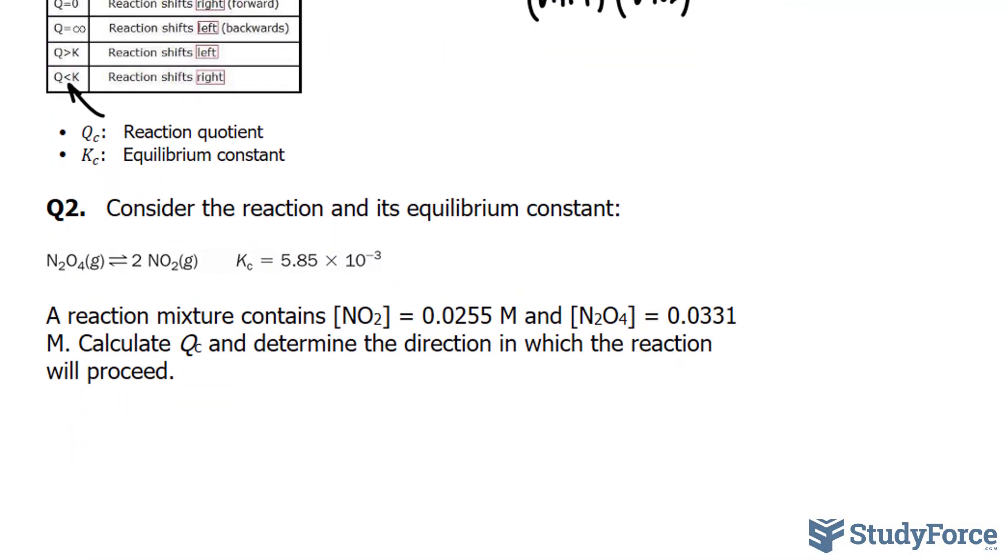Let's move on to question two. This time we're asked, consider the reaction and its equilibrium constant. This time the equilibrium constant is relative to the concentration. A reaction mixture contains a concentration of NO2 of 0.0255 and N2O4 of 0.0331 molars. Calculate Q sub C and determine the direction in which the reaction will proceed.